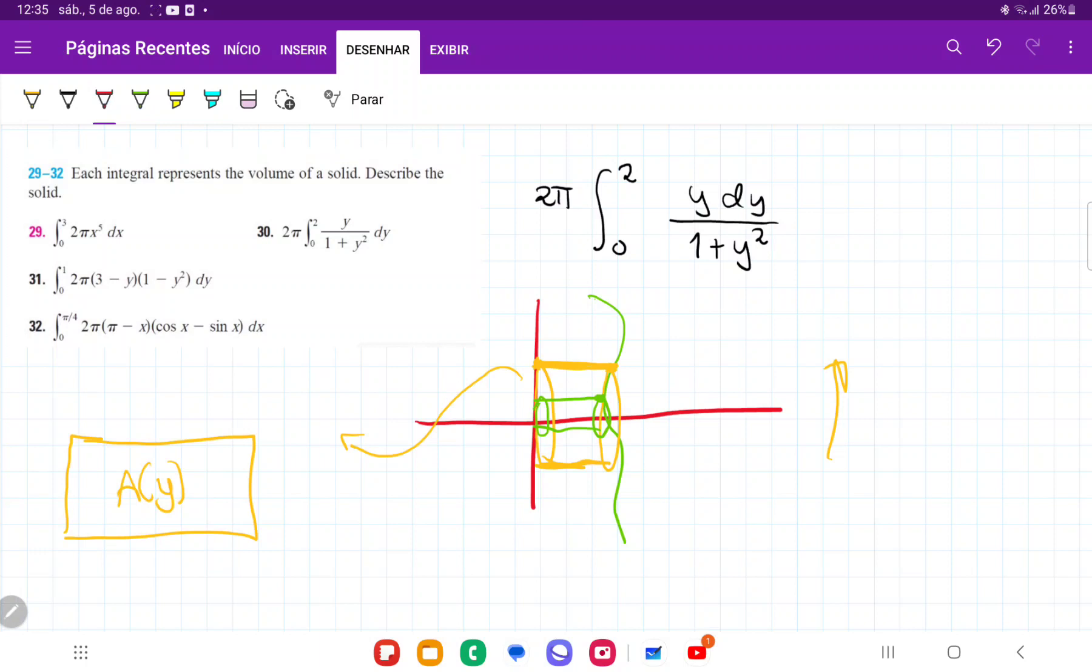So in this generic situation here, where we're summing it up from a point A to a point maybe B, this generic situation would be represented by volume as the integral from A to B of A(y) dy. We're summing up these areas, these infinitely thin sheets of paper, or whatever material.